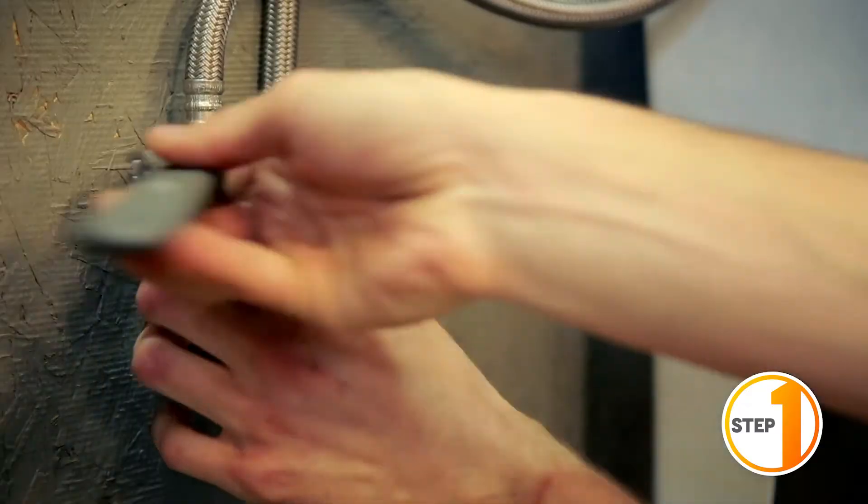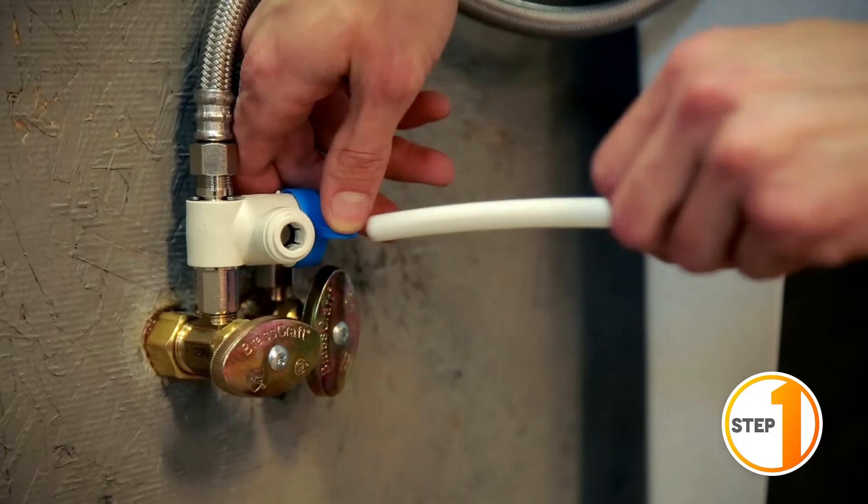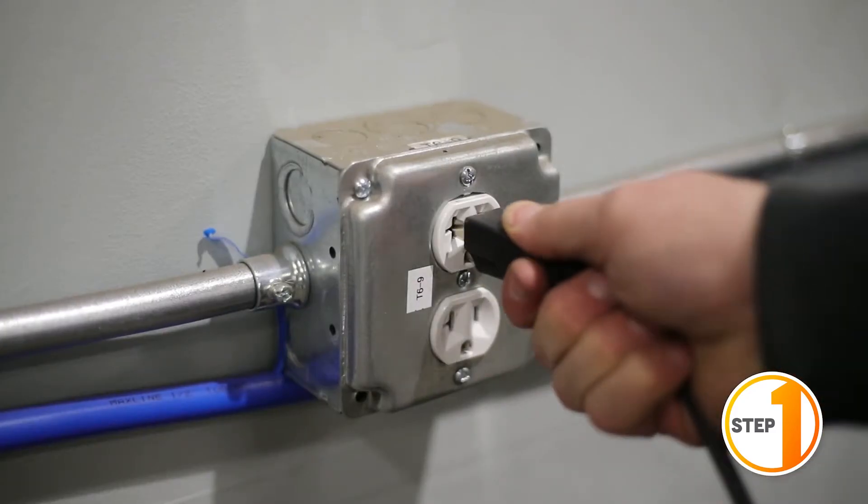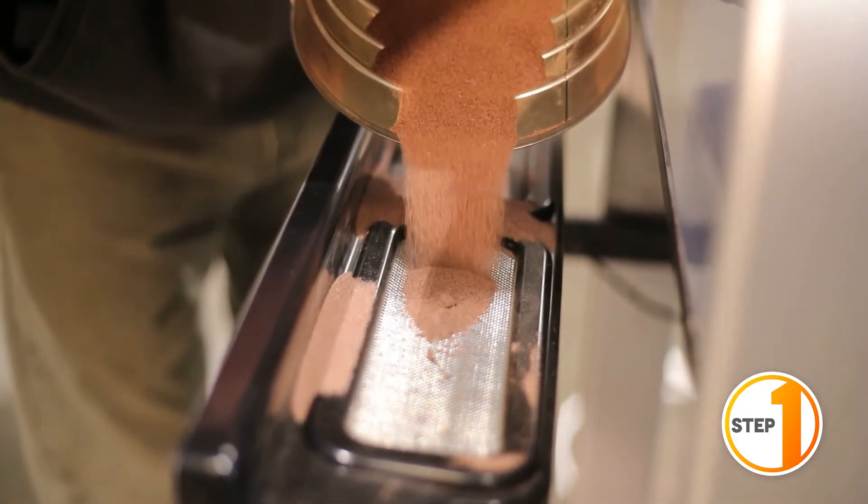Step 1 is setup. This involves connecting the Wazer to a household water supply, plugging it into a standard household outlet, and adding the garnet abrasive.